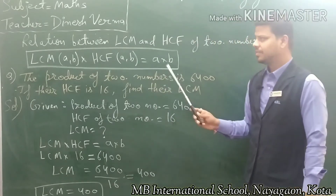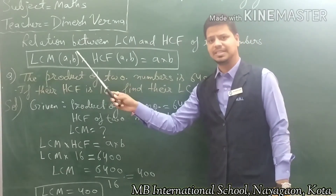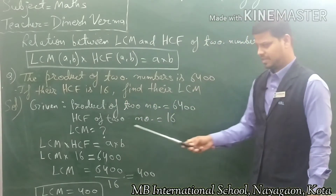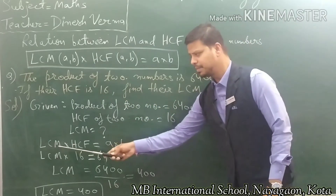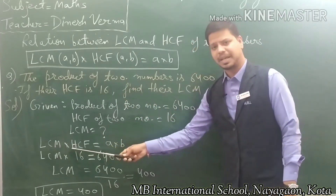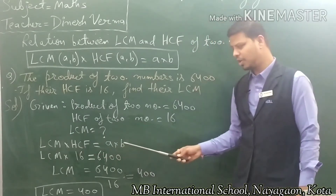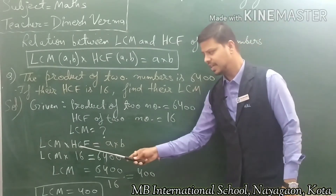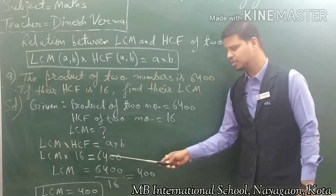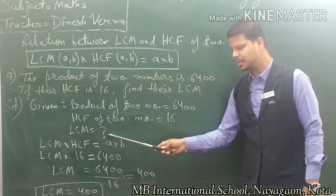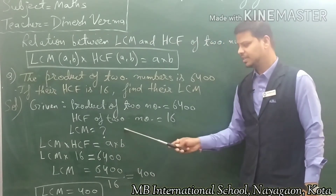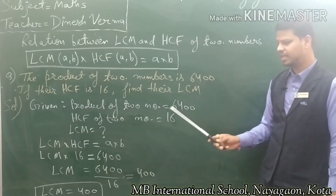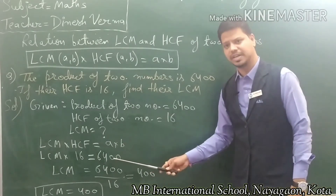Now we use the relation between LCM and HCF of 2 numbers. LCM × HCF = product of the 2 numbers. So LCM × 16 = A × B. The product of these 2 numbers is given as 6400, so we substitute 6400 here.